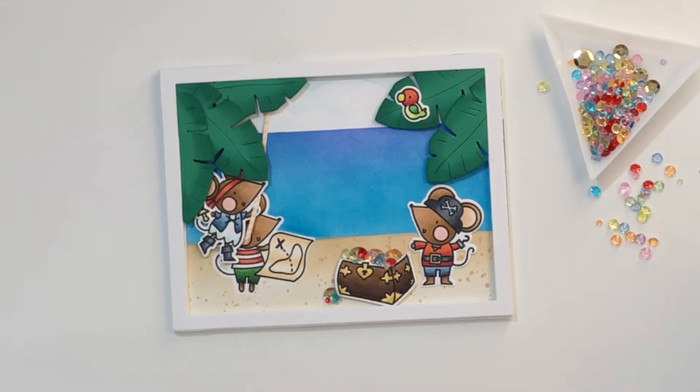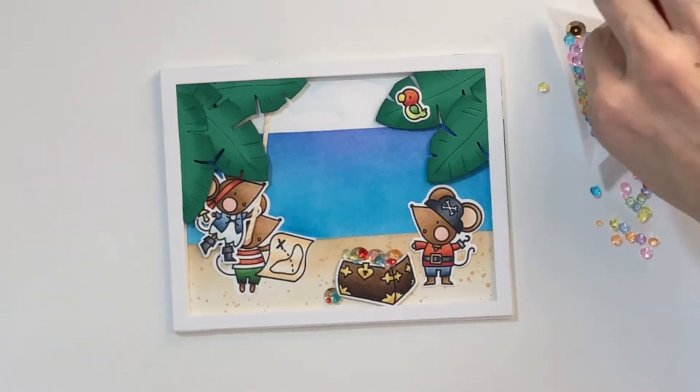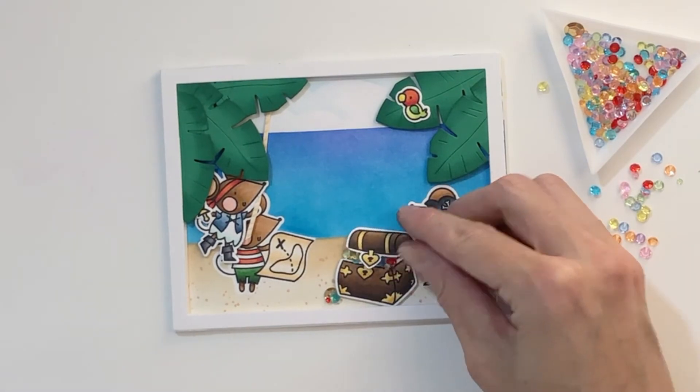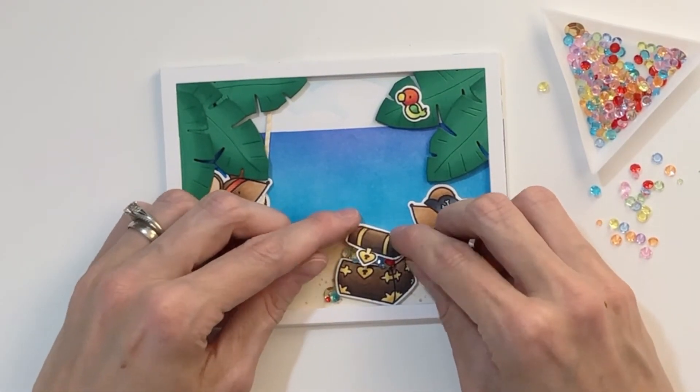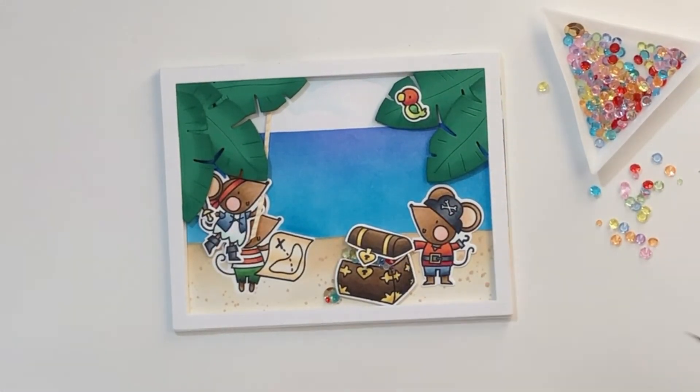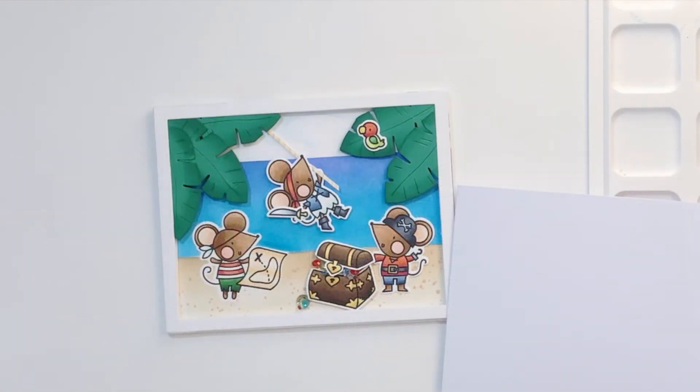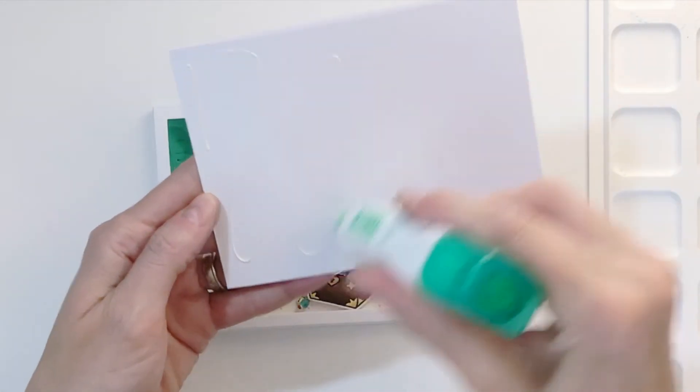Once I have this treasure chest pretty full, I'm going to grab my lid and place it on top. Again, my lid has a little bit of foam tape on it too. So its height can kind of compensate for all that thickness of the gems. And then I'll finish fine-tuning by adding a couple more gems here just so it looks like it's really full and you can really see all the details.